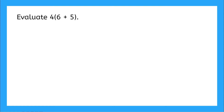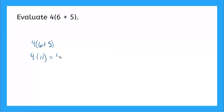So what answer did you get? Let's work it out together. I'm sure you used order of operations, right? So that would mean if we have 4 all times 6 plus 5, we do our addition inside the parentheses first, and we would get 4 times 11, and that would give us an answer of 44.